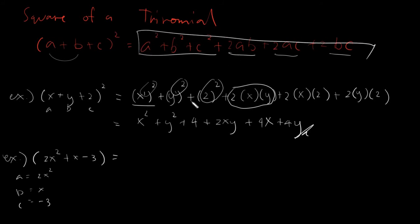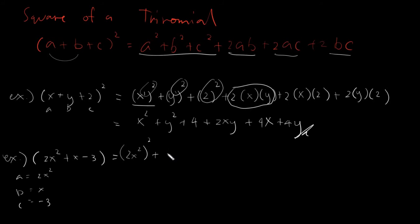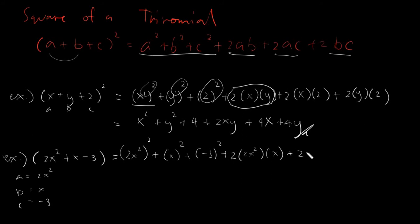Then we apply our rule again with this structure. A squared would be (2X²)². B squared is X squared. And C squared is (−3)². Then plus — take note, it's always plus, and always twice — twice AB: A is 2X² and B is X. Plus twice AC: A is 2X² and C is negative 3. Plus twice BC: B times C.